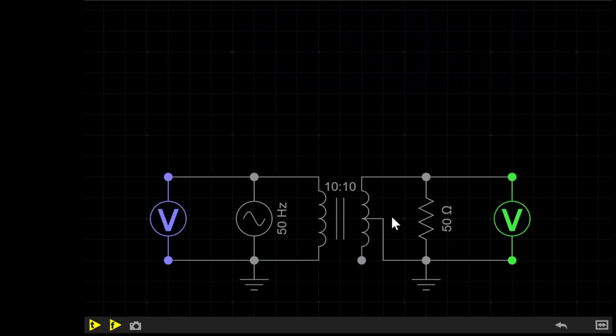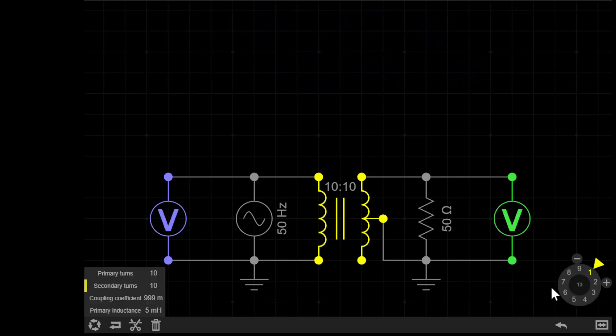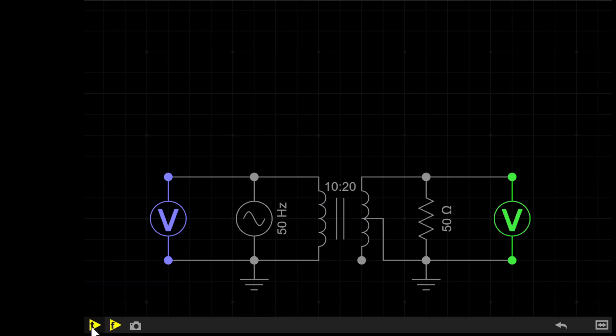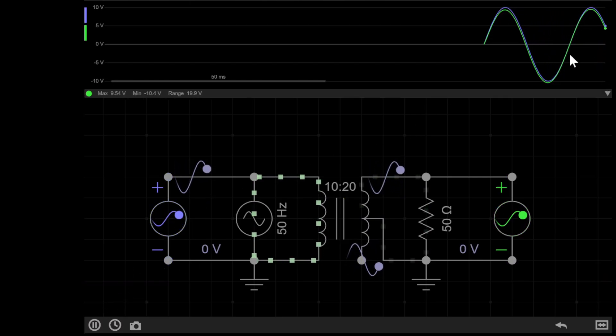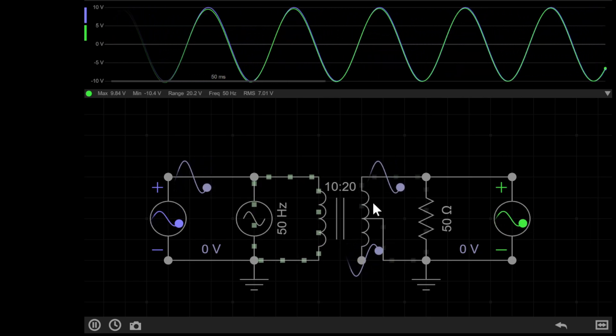If I were to then pause the simulation and double the number of turns of the secondary up to say 20 and then simulate, you'd see that the input and output voltage once again match up because there's now 10 turns here, 10 turns here, but because the center tap is connected we're only using 10 turns on the secondary.